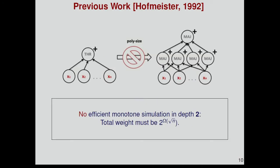In 92, Hoffmeister showed the following. There exists a single monotone threshold gate with large weights, such that you cannot simulate with two layers of monotone majorities. If you want to have a simulation like this, then you need the weights to be 2 to the square root of n. The function used by Hoffmeister is actually computed by depth 3 monotone majority circuits.